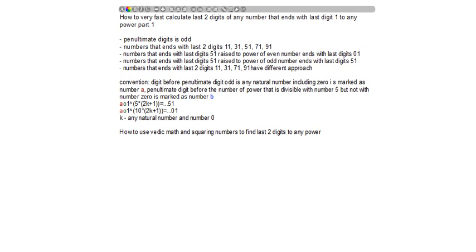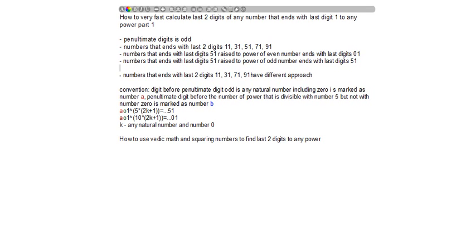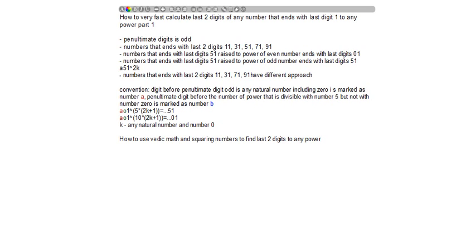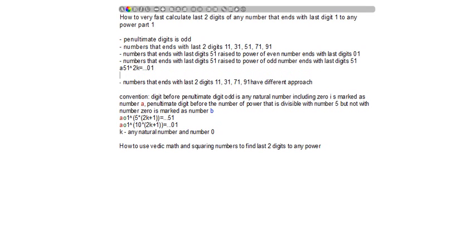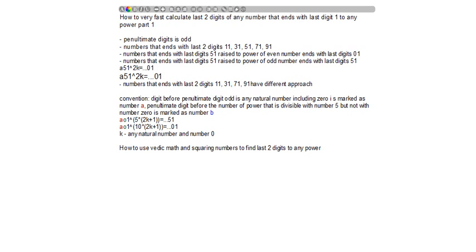Let's write the formula. a51 to the power of 2k, where k is a natural number, ends with last two digits 01. The same number a51 to the power of 2k plus 1 ends with last two digits 51.